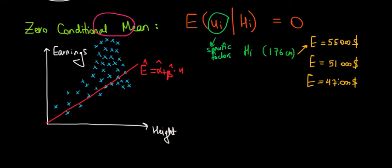So in the best case scenario this should be completely random. There shouldn't be a pattern, shouldn't be a relationship between the error term and the independent variable.